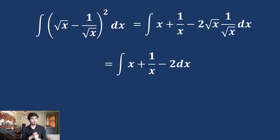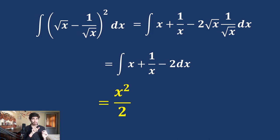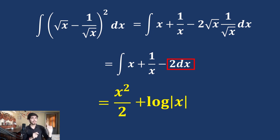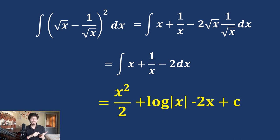Let's expand the square: (a − b)² = a² + b² − 2ab, giving us x² + 1/x² − 2. The integration of x^n is x^(n+1)/(n+1), so integration of x² is x³/3. Integration of x^(−2) is x^(−1)/(−1) = −1/x. Integration of 1/x is log x. For the constant 2, integration of 1 is x, so we get 2x. Therefore the answer is x³/3 − 1/x − 2 log x − 2x + c, where c is the constant of integration.